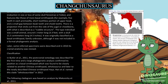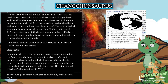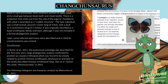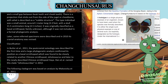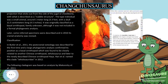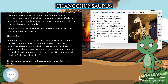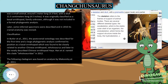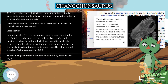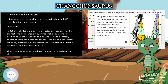Later, some referred specimens were described and in 2010 its cranial anatomy was revised. In Butler et al. 2011, the post-cranial osteology was described for the first time and a large phylogenetic analysis confirmed its position as a basal ornithopod, closely related to another Chinese ornithopod Jeholosaurus and later to the newly described Chinese ornithopod Haya. Han et al. named this clade Jeholosauridae in 2012. The following cladogram was based on analysis by Makovicki et al. 2011.